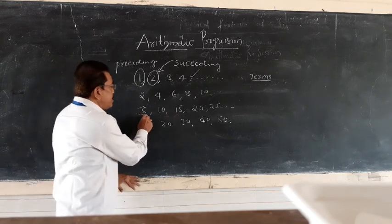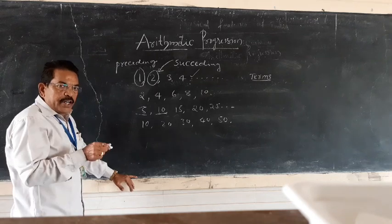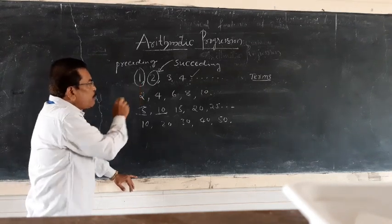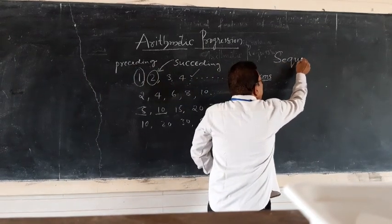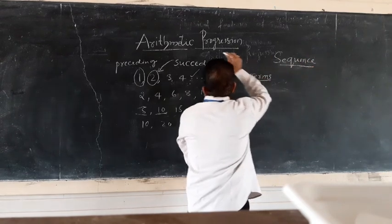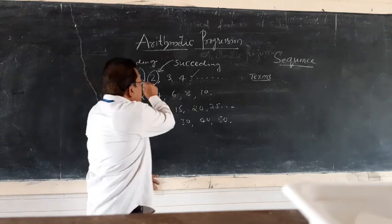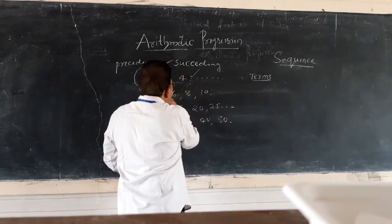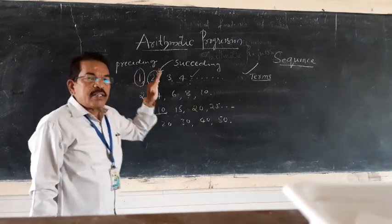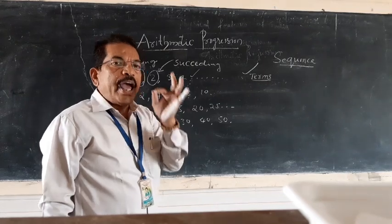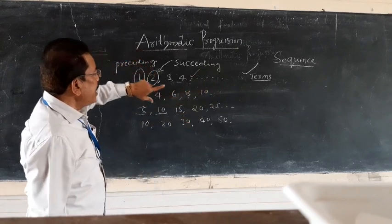In 5, 10, 15 — this one is the preceding term and this one is the succeeding term. A set of numbers written according to some rule is called a sequence. The numbers written in a sequence are called terms.